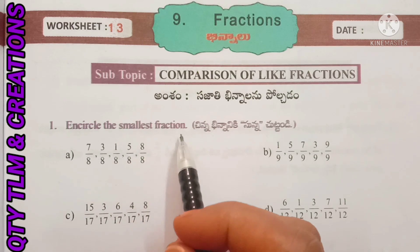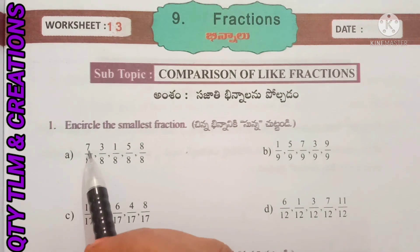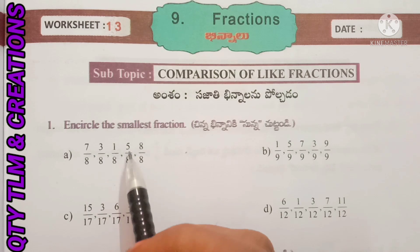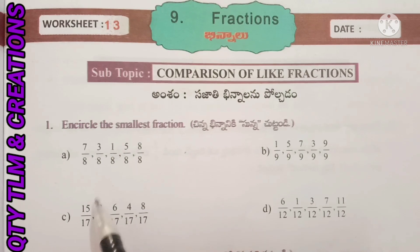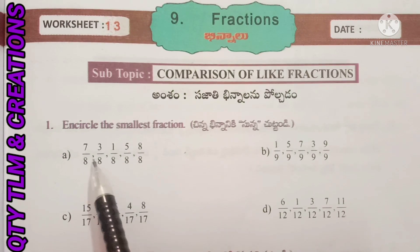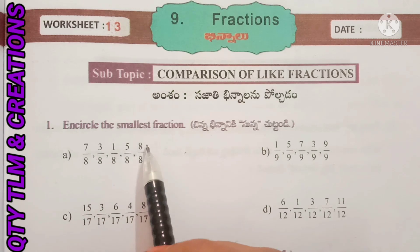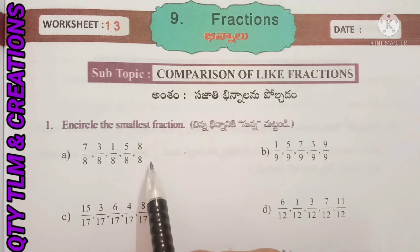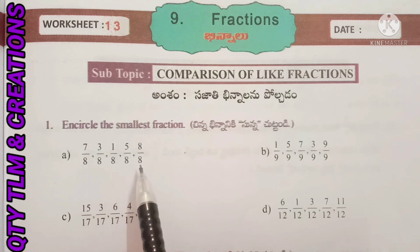Circle the smallest fraction. A: 7 by 8, 3 by 8, 1 by 8, 5 by 8, 8 by 8. Observe these fractions. Numerators are different but denominators are same, so these fractions are like fractions.